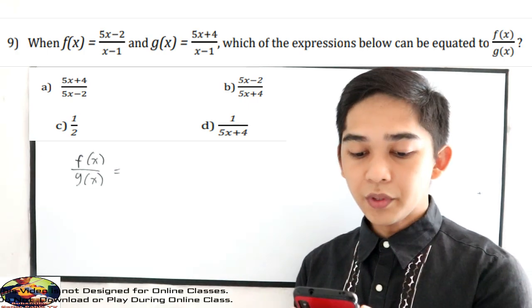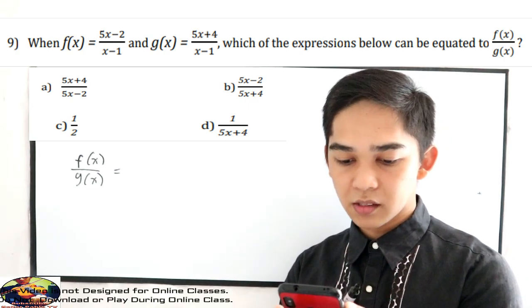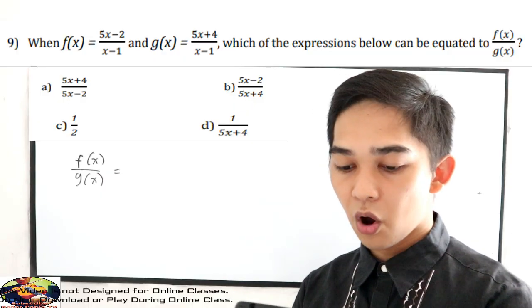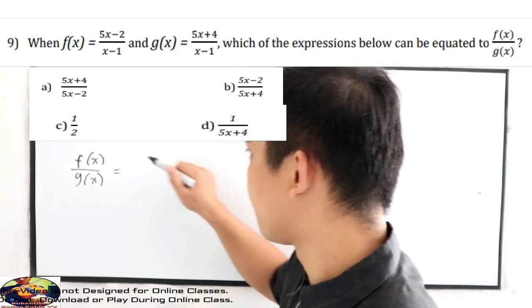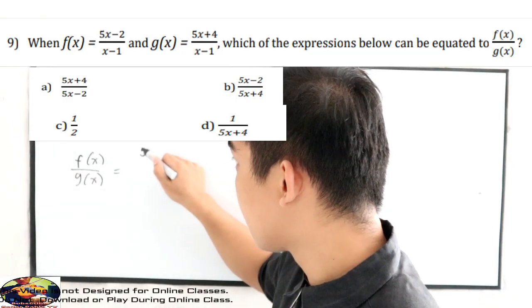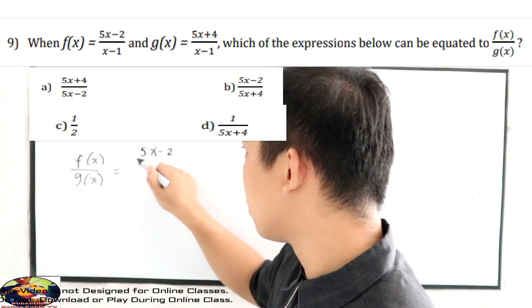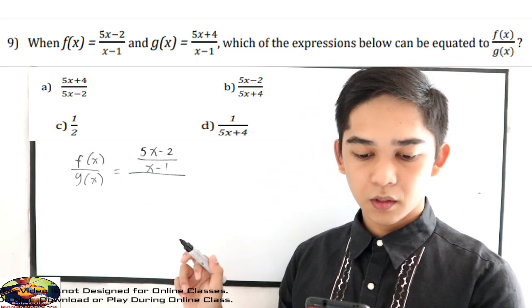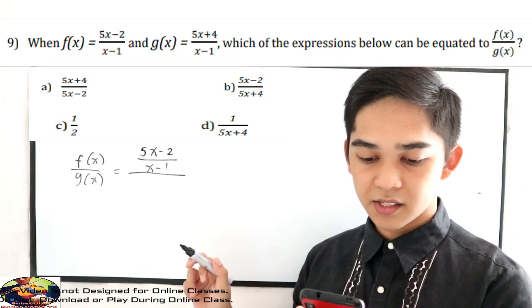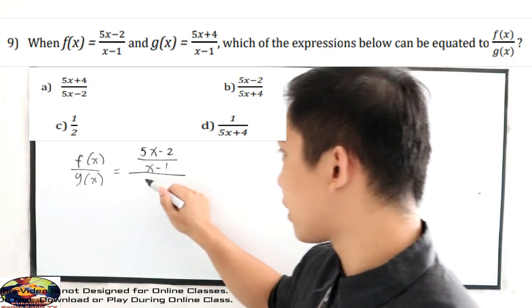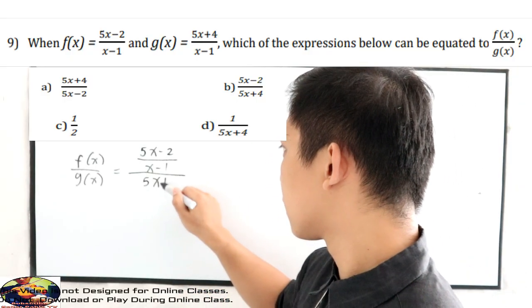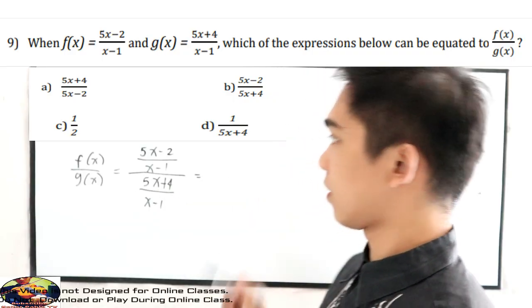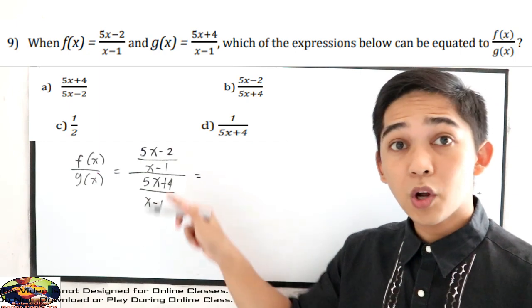We know that f of x is equal to 5x minus 2 over x minus 1, all over g of x which is 5x plus 4 all over x minus 1. So we are going to simplify.